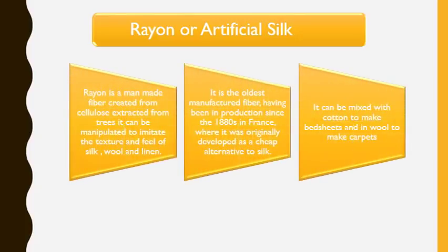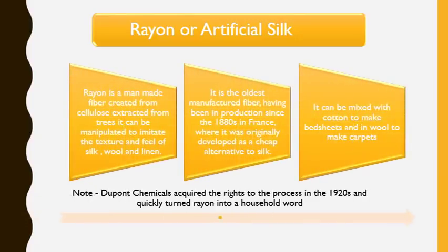The first fiber we will cover is rayon, which is also called artificial silk. Rayon is a man-made fiber which is created from cellulose extracted from trees. It can imitate the texture of silk, wool, or linen. It is the oldest manufactured fiber, and the production of this fiber started somewhere in France in the 1880s.